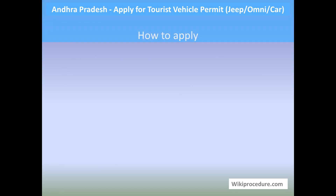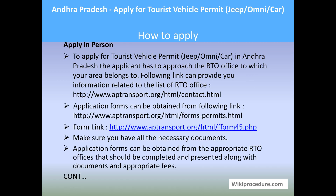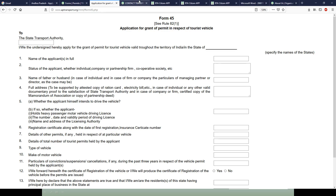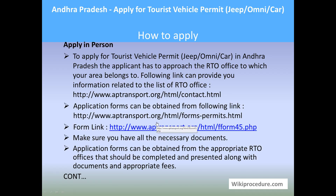Let us see how to apply in person. To apply for a tourist vehicle permit — jeep, omni, or car — in Andhra Pradesh, you must go to the concerned RTO office for your area. If you don't know the local RTO office, use the contact link provided to reach the Andhra Pradesh state portal contact page, where you can filter to identify the local RTO office. You can download the application form using the two links mentioned. Make sure you have all necessary documents before applying, as a missing document will result in rejection.